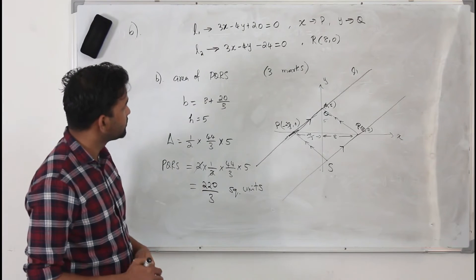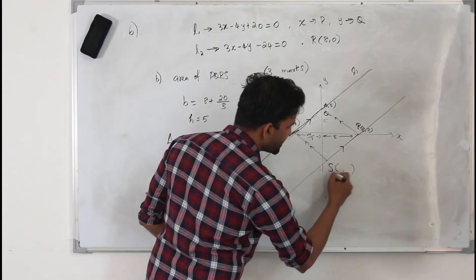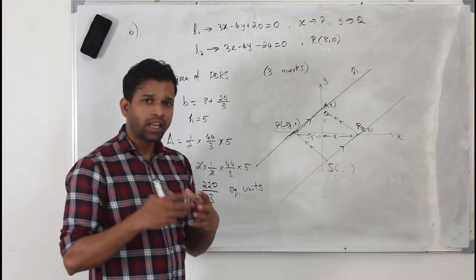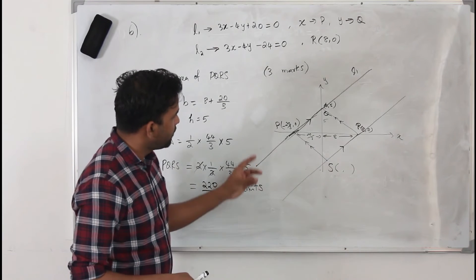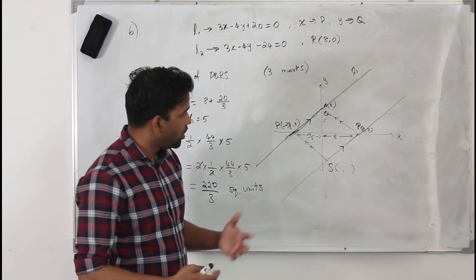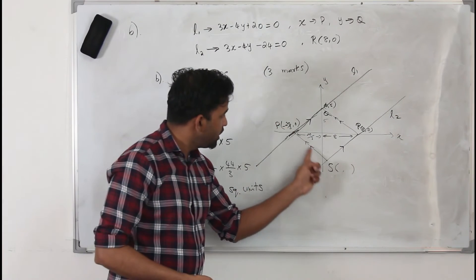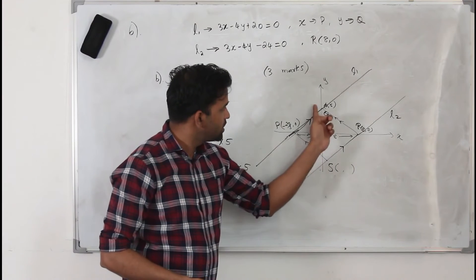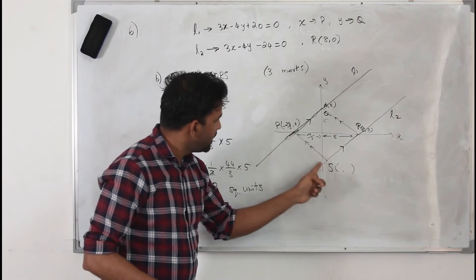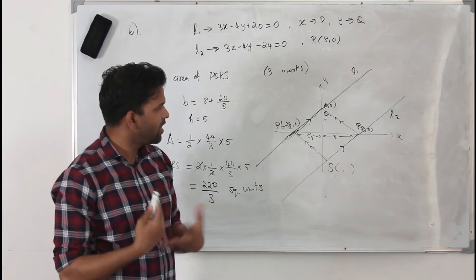Now Part C: find the coordinates of S, which has 2 marks. There are several methods — you could equate side lengths, solve simultaneous equations, or find the equation of line QS — but because this is only 2 marks, you should use the quickest approach.